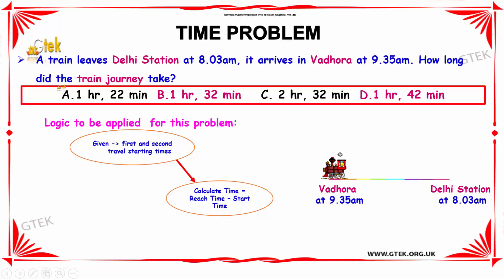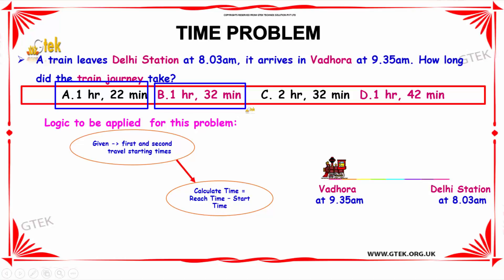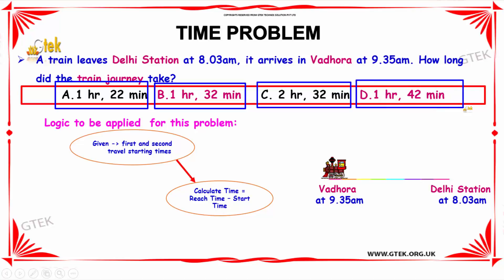The options given are: Option A is 1 hour 22 minutes, Option B is 1 hour 32 minutes, Option C is 2 hours 32 minutes, and Option D is 1 hour 42 minutes.